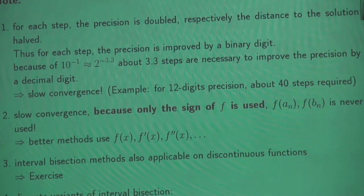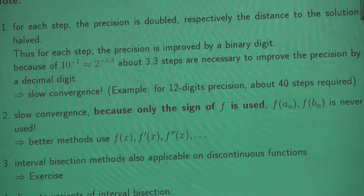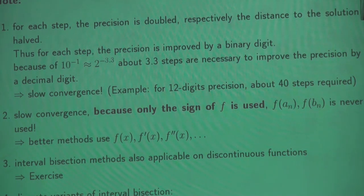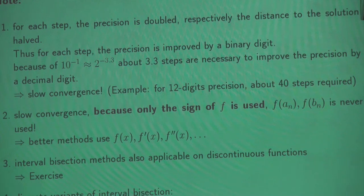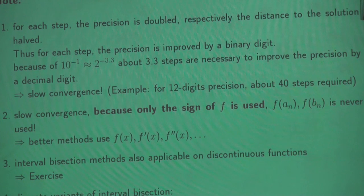That doesn't look too bad. In order to get a precision of 10 digits, we would need 33 steps, which is not too bad. But there are methods for finding roots which are much, much faster. Compared to other methods like Newton's method, this is quite slow. Why? Because this method only exploits the sign of the function — nothing else. The only information we use is the sign of the function in the middle of the interval.